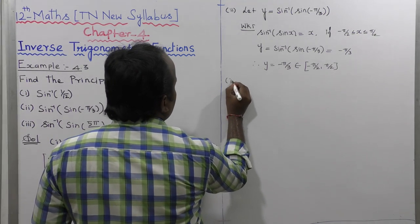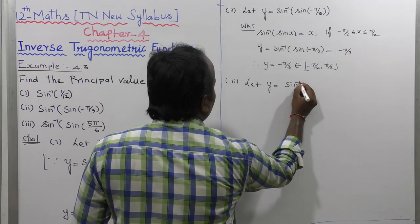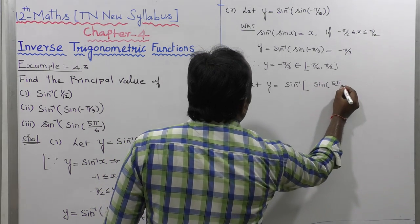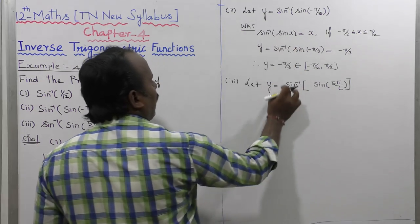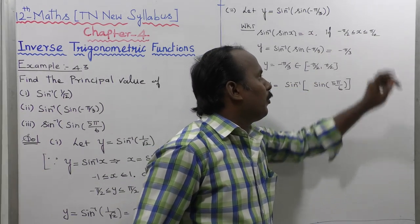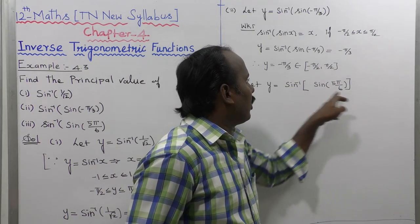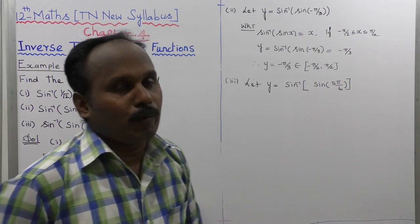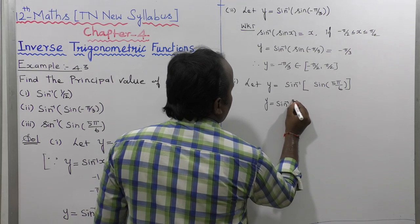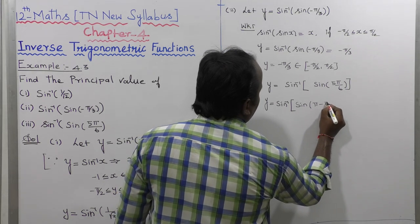Now going to the third subdivision. Let us consider y equal to sin inverse of sin of 5 pi by 6. We note that 5 pi by 6 is not in the range minus pi by 2 to pi by 2. We rewrite sin(5 pi by 6) as sin(pi minus pi by 6).